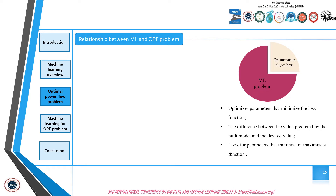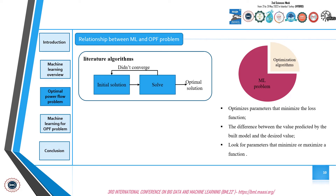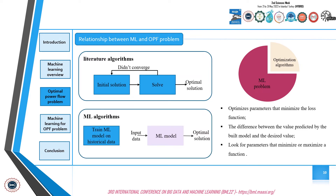Machine learning and optimization methods are complementary to each other. According to the literature, the optimal power flow problem solving process begins with identification of an initial solution and subsequently solving the equations of the problem. For each iteration, if the problem converges, we get the optimal solution; otherwise, the process starts over. The major problem with this process is the long calculation time, since this process is used hundreds of times a day. So we need to find a faster process, and the use of machine learning algorithms makes it possible to replace the iterative process and subsequently improve the computation time.